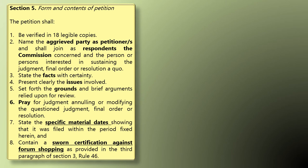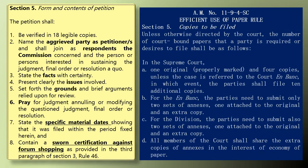Aside from being verified, the petition should be filed in 18 copies. But relate that to the efficient use of paper rule. If you are filing in the Supreme Court, only 5 copies — one original, properly marked, and 4 copies — unless it is to the court en banc, in which case you add 10 additional copies. For annexes, you need only two sets: one attached to the original and one extra copy, since members of the court share the extra copies in the interest of economy of paper.